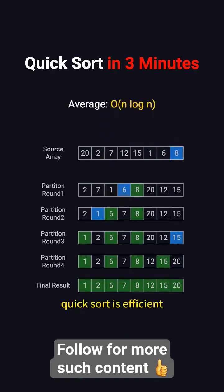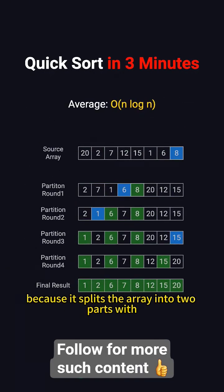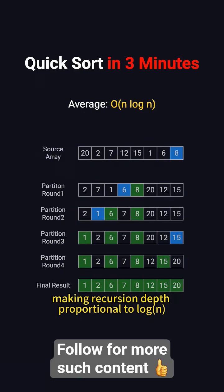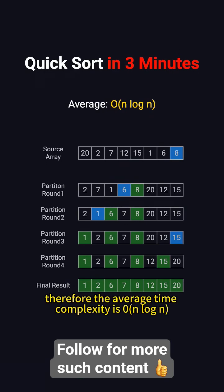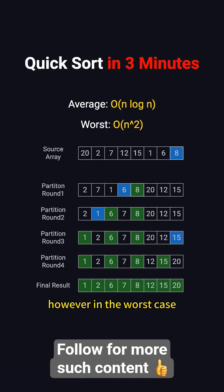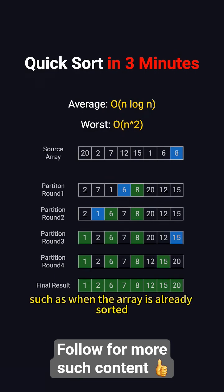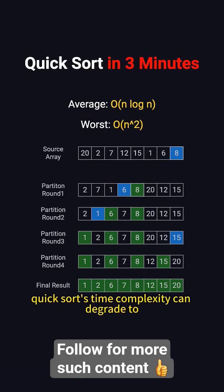Repeat the same steps for both parts until the entire array is fully sorted. QuickSort is efficient because it splits the array into two parts with each partition, making recursion depth proportional to log n. At each recursion level, operations take O(n) time. Therefore, the average time complexity is O(n log n). However, in the worst case, such as when the array is already sorted, QuickSort's time complexity can degrade to O(n²).